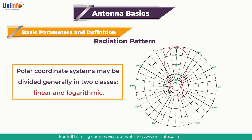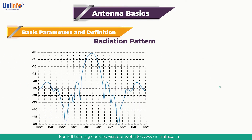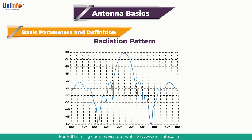Polar coordinate systems may be divided generally into two classes: linear and logarithmic. In the linear coordinate system, the concentric circles are equally spaced and are graduated. Such a grid may be used to prepare a linear plot of the power contained in a signal. For ease of comparison, the equally spaced concentric circles may be replaced with appropriately placed circles representing the decibel response, referenced to zero decibel at the outer edge of the plot.